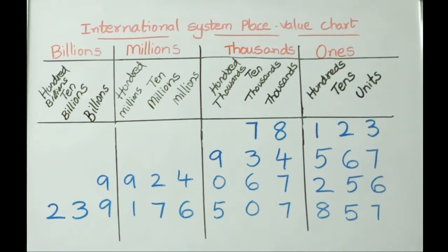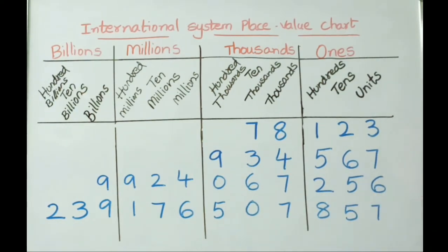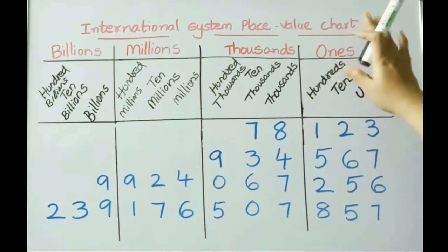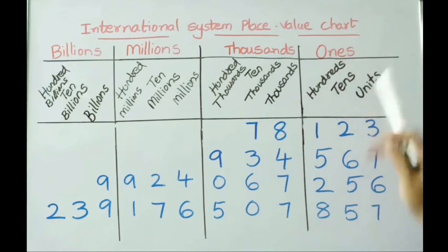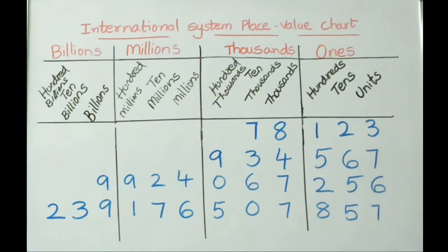In the International Place Value System, each period has three places, so each group or period is separated by a comma. Now let us write these examples in word form and expanded form.